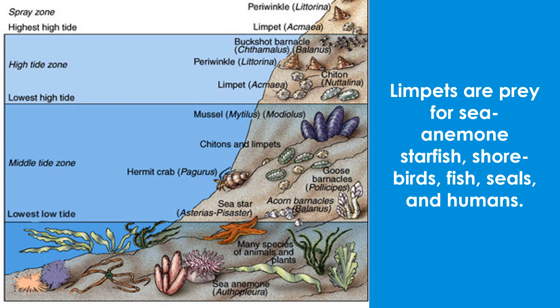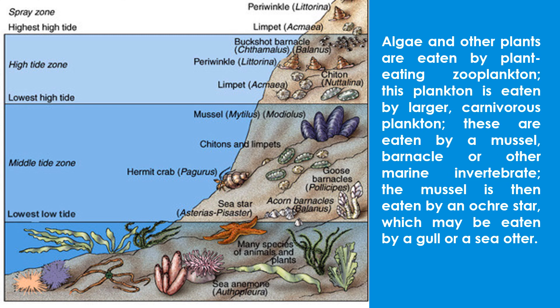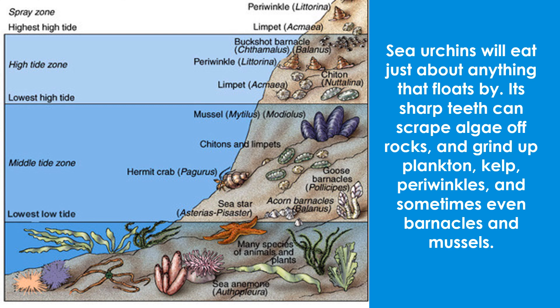Limpets are prey for sea anemone, starfish, shorebirds, fish, seals, and humans. Algae and other plants are eaten by plant-eating zooplankton. This plankton is eaten by larger carnivorous plankton, which are eaten by a mussel, barnacle, or other marine invertebrate. The mussel is then eaten by an ochre star, which may be eaten by a gull or a sea otter. Sea urchins will eat just about anything that floats by. Their sharp teeth can scrape algae off rocks and grind up plankton, kelp, periwinkles, and sometimes even barnacles and mussels.